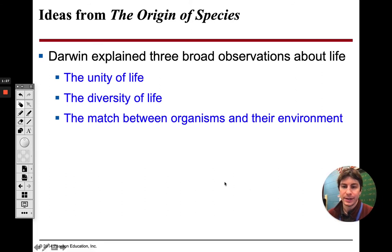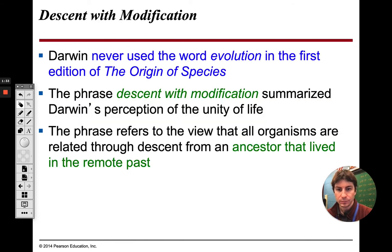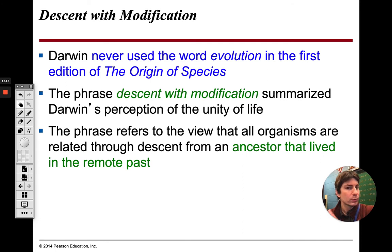In Darwin's book, he explained three things: unity of life, diversity of life, and the match between organisms and their environment. We'll go through each of these in the next section. Darwin never used the word 'evolution' in his book The Origin of Species — he always said 'descent with modification,' because Darwin was not the first person to mention evolution.